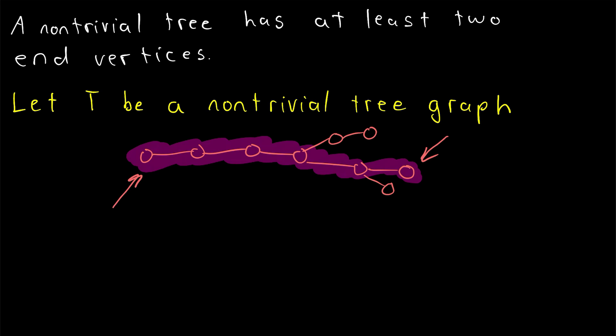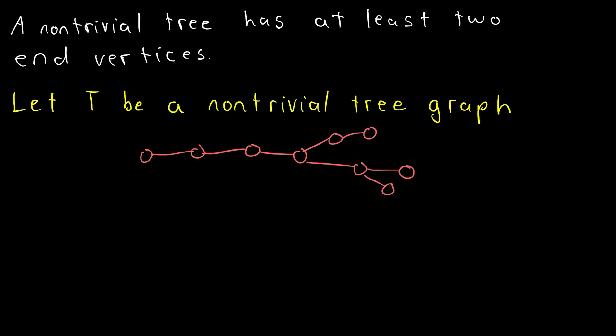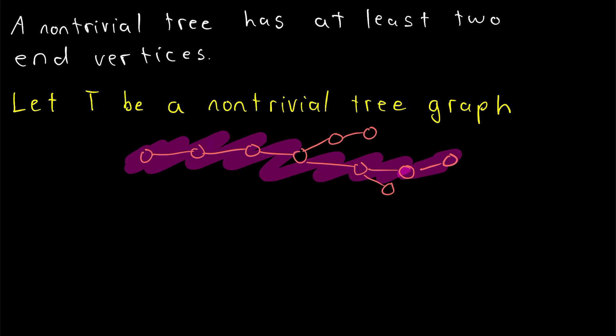They both have a degree equal to one. And it seems reasonable to suspect that that might always be the case, because if these vertices had any additional neighbors outside of the path, then what we were looking at wouldn't be a longest path, because it could have been extended to those additional neighbors.